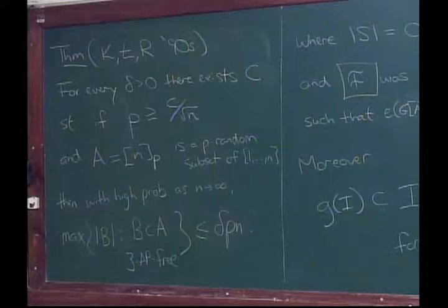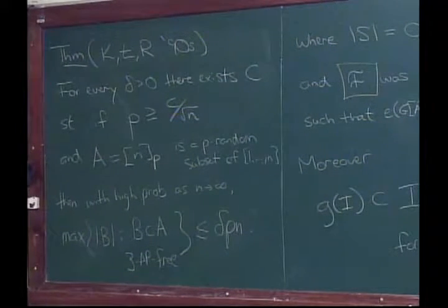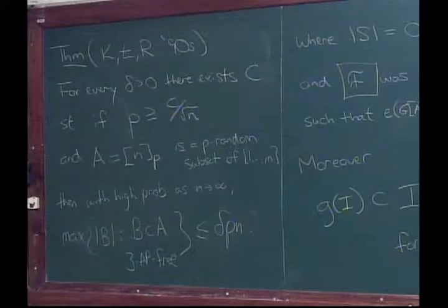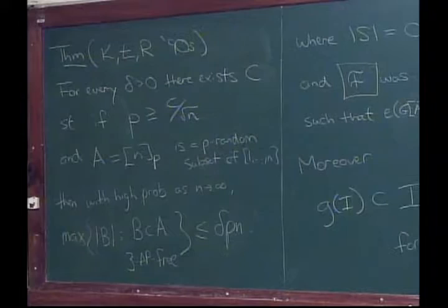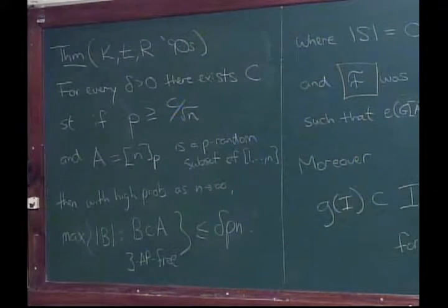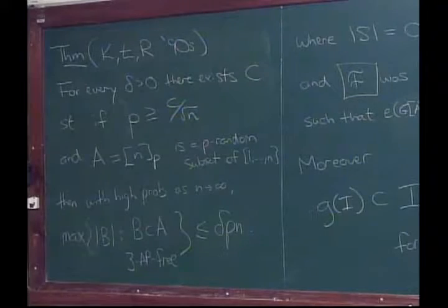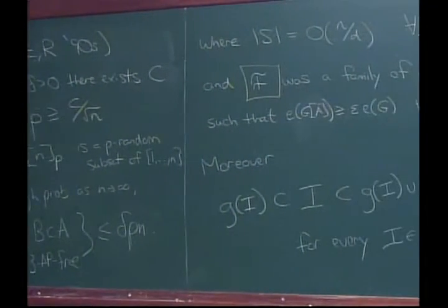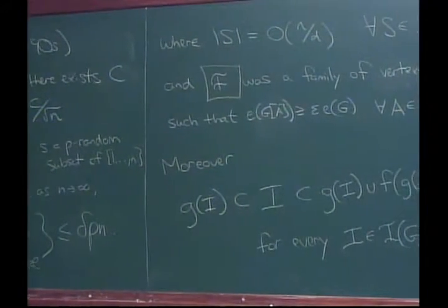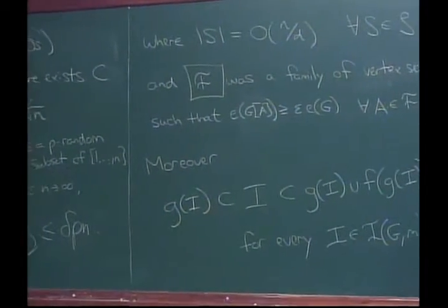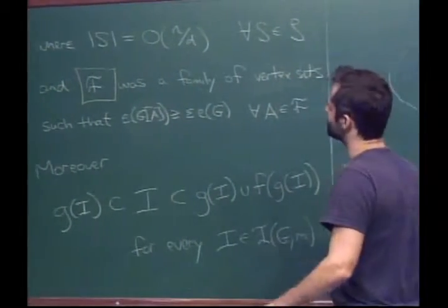The threshold 1/√N is the point at which your bound P³N² equals PN, so at the threshold the same argument fails. When P gets bigger, your bound is trivial because it's bigger than A. The exponential bound is e^{-PN}, not P³N².